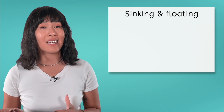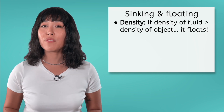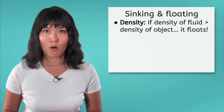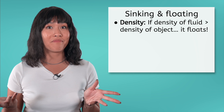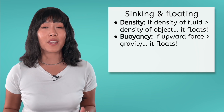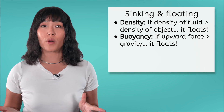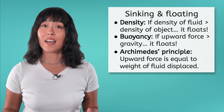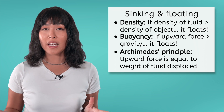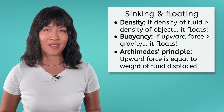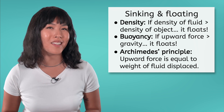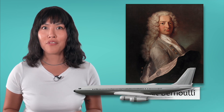As we went through the lesson today, we saw how both density and buoyant forces can be used to explain the process of sinking or floating. Using density, we know that if the density of the fluid is greater than the density of a submerged object, the object will float. If we consider buoyant forces, an object will float if the upward buoyant force is greater than the downward force due to gravity. The upward buoyant force can be determined using Archimedes' principle, which says that the upward force is equal to the weight of the fluid displaced by the object. Next time, we'll take a look at the contributions of another scientist, Daniel Bernoulli, and see how his discovery relates to the accomplishment of human flight.